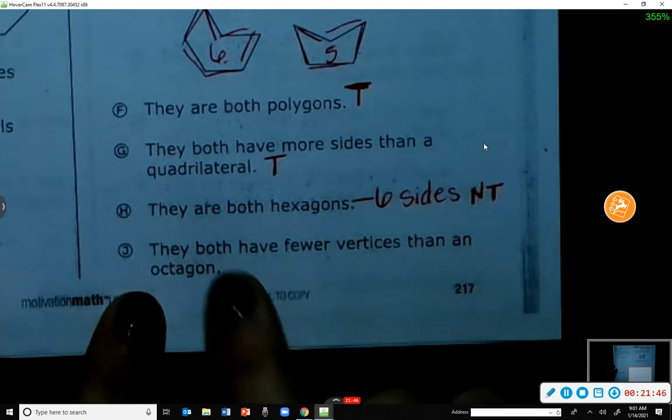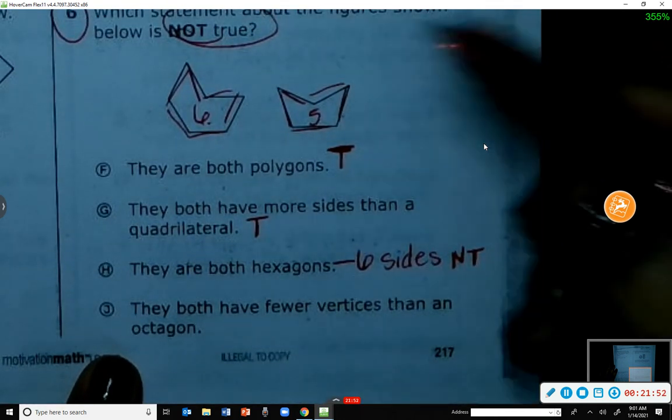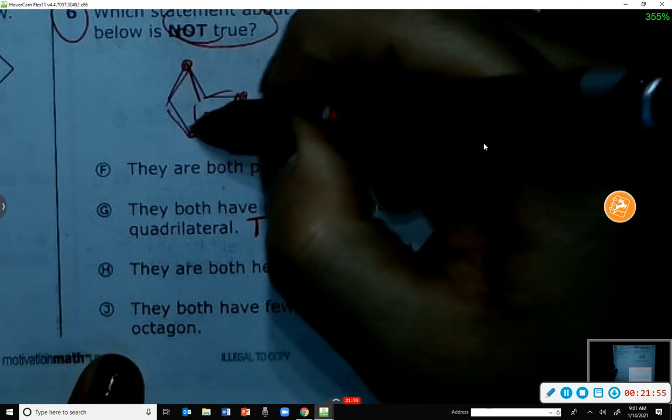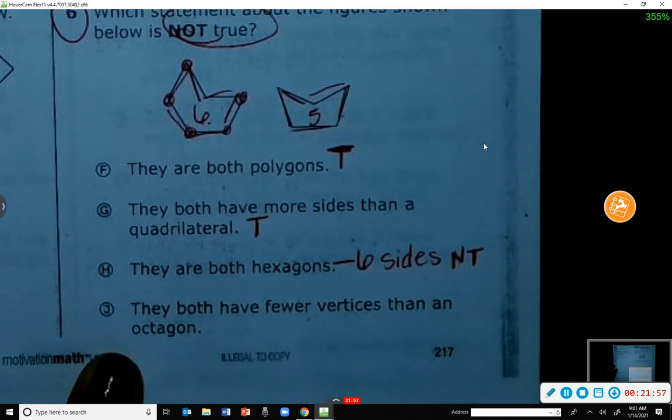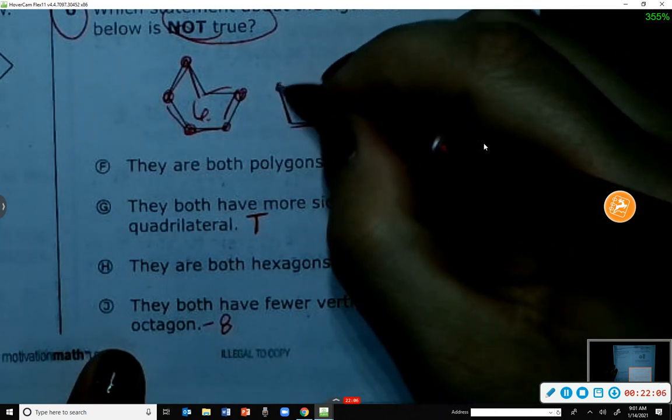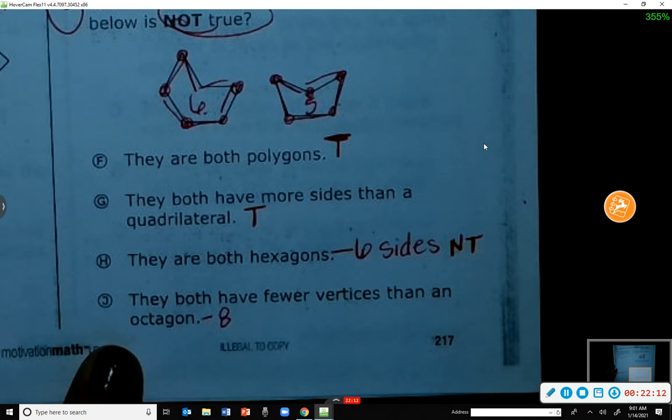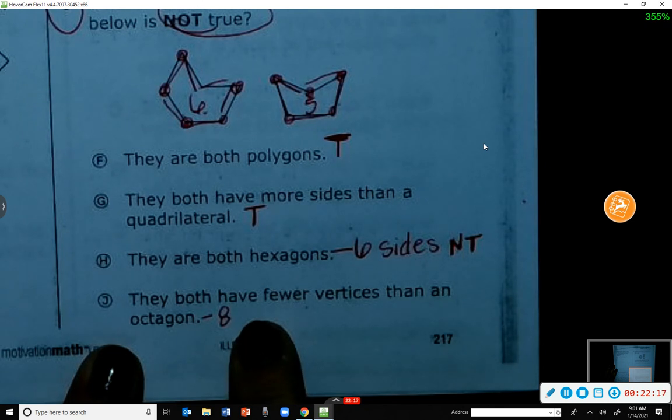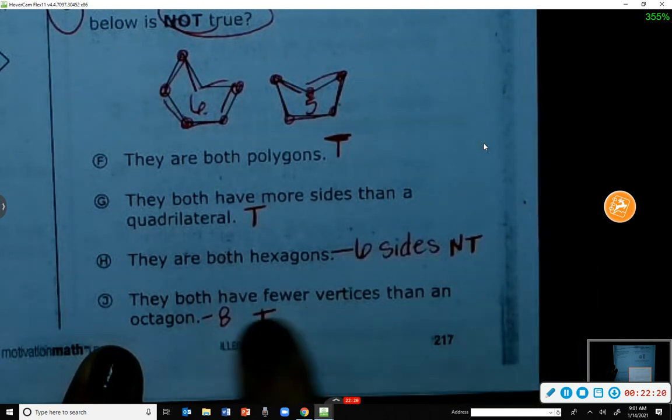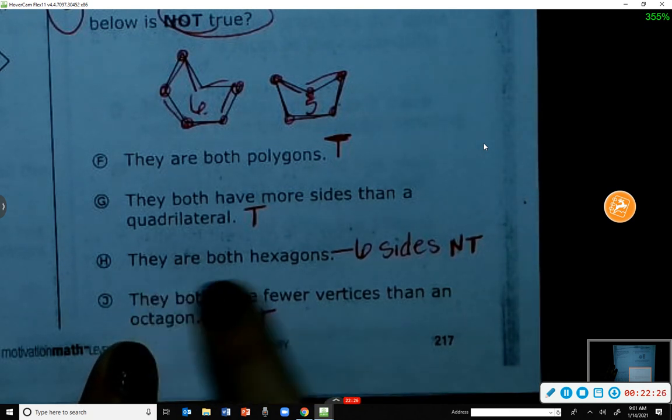J: They both have fewer vertices than an octagon. Let's see. One, two, three, four, five. Is that fewer than an octagon? Yes, because octagon has eight. One, two, three, four, five. Is that fewer than an octagon? Yes. So that makes this statement true. They both have fewer vertices than an octagon - that's true. The only one that was not true was H.